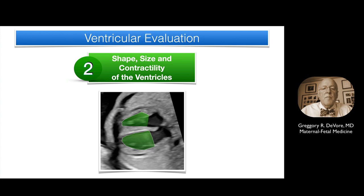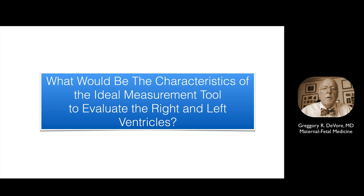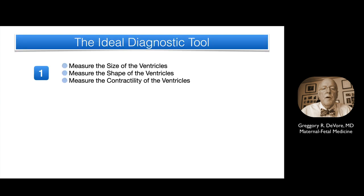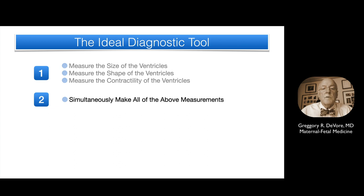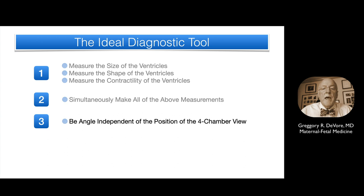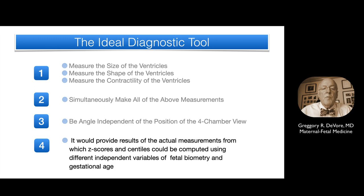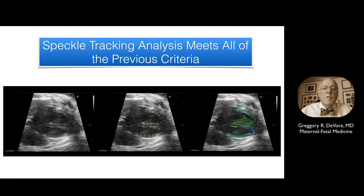Once the four-chamber view size and shape have been analyzed, the next step involves measuring the shape, size, and contractility of the right and left ventricles. What would be the characteristics of the ideal measurement tool? First, it would measure the size, shape, and contractility of the ventricles. Second, it would simultaneously make all of the above measurements. Third, it would be angle independent of the position of the four-chamber view relative to the ultrasound beam. Fourth, it would provide actual measurements from which z-scores and centiles could be computed using different independent variables. Speckle tracking analysis meets all of these criteria.